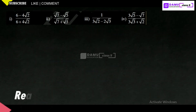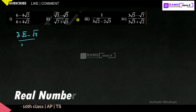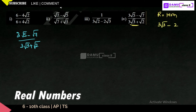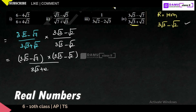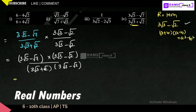Our fourth problem is (3 root 5 minus root 7) divided by (3 root 3 plus root 2). The rationalizing term is the denominator with the symbol changed: 3 root 3 minus root 2. We multiply and divide by (3 root 3 minus root 2), giving (3 root 5 minus root 7)(3 root 3 minus root 2) in the numerator and (3 root 3 plus root 2)(3 root 3 minus root 2) in the denominator. This is the (a plus b)(a minus b) format giving a squared minus b squared.